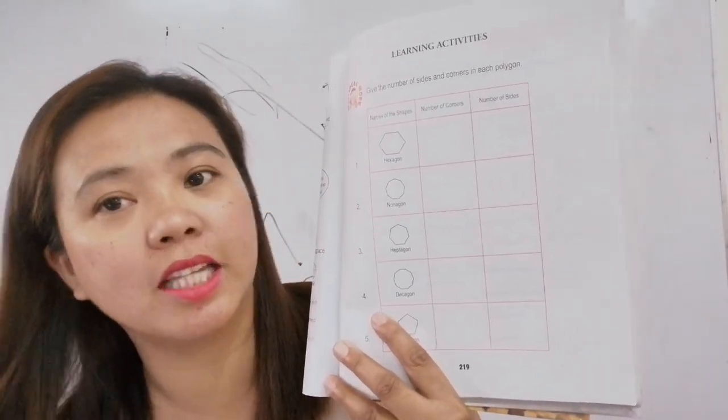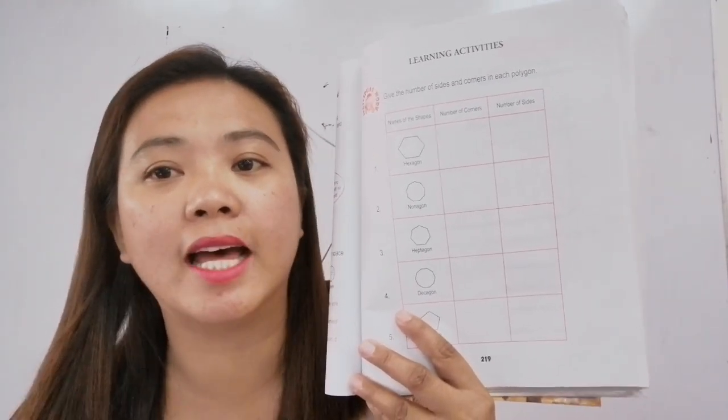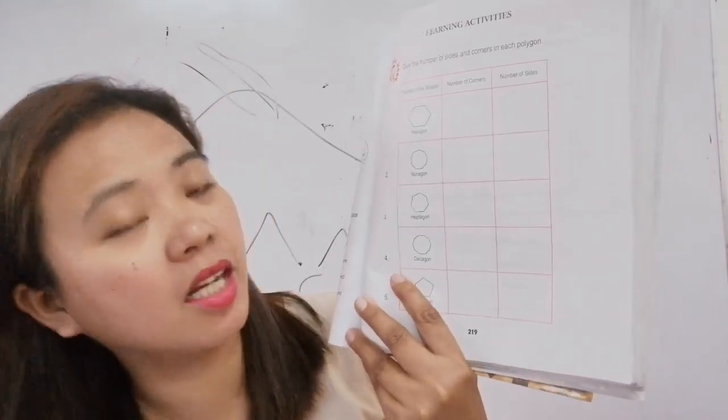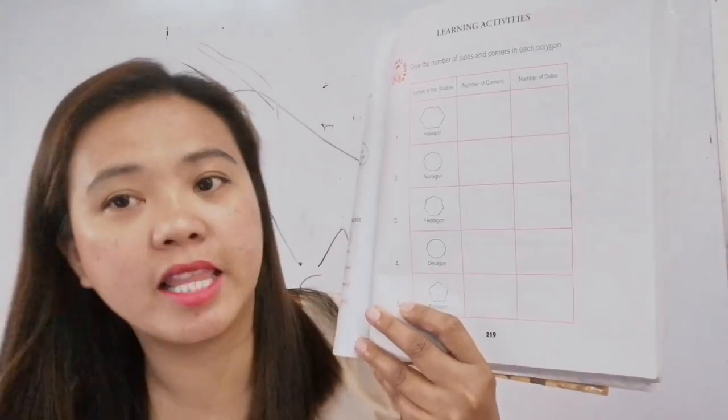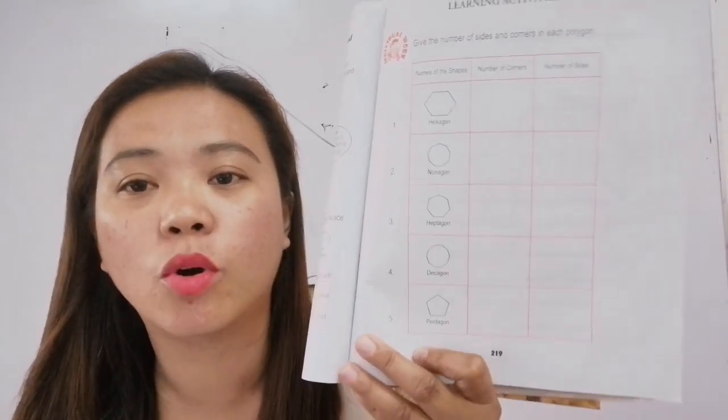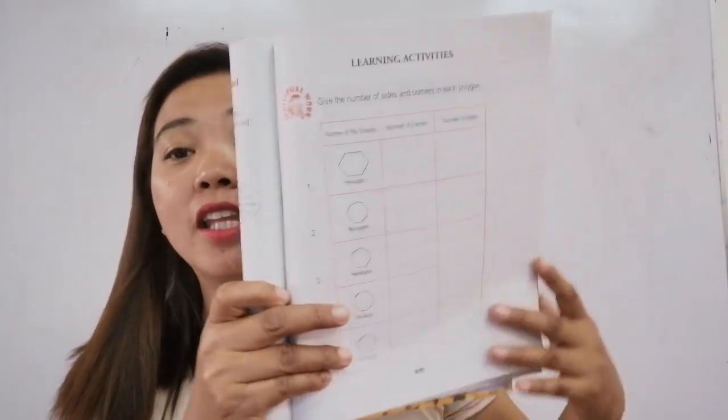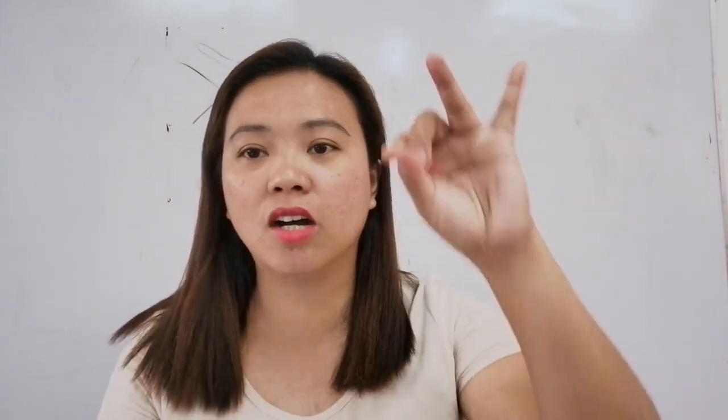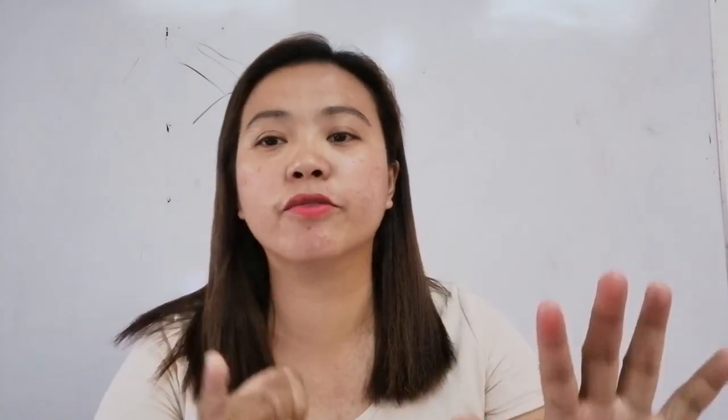One, two, three, four, five, and six. Hexagon has six corners and six sides. Nonagon has nine corners and nine sides. Heptagon has seven corners and seven sides. Decagon has ten corners and ten sides. Pentagon has five corners and five sides, and we added octagon which has eight corners and eight sides. So we have pentagon, hexagon, heptagon, octagon, nonagon, and decagon. Remember that: five for pentagon, six for hexagon, seven for heptagon, eight for octagon, nine for nonagon, and ten for decagon.